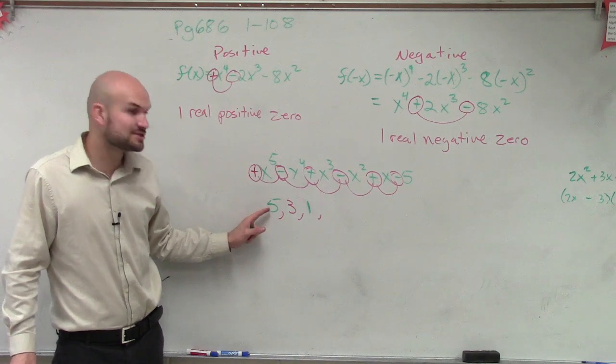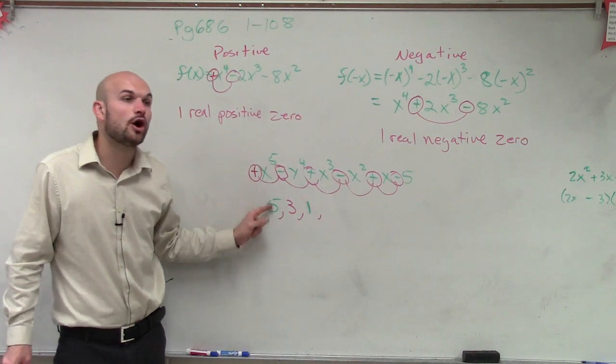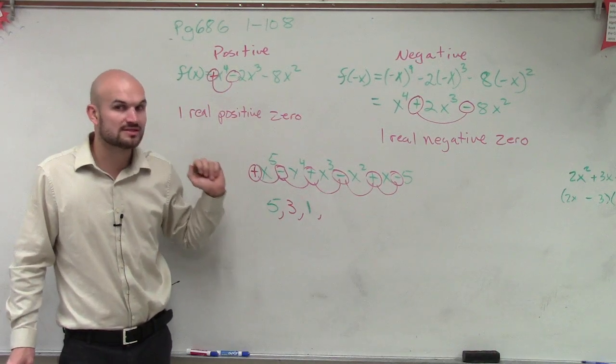Well, so five minus two is three, five, three minus two would be one. So therefore, you have all three of these are possible zeros.